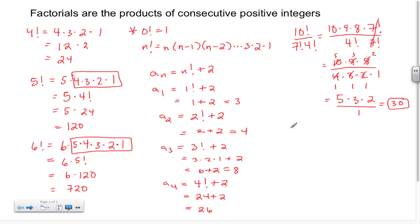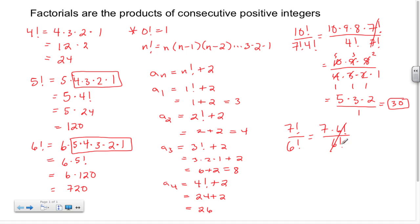For our last example, let's look at 7 factorial divided by 6 factorial. 7 factorial is the same thing as 7 times 6 factorial. I have a 6 factorial in my denominator, so that's why I stopped there — the matching factors cancel, and I'm left with just 7.